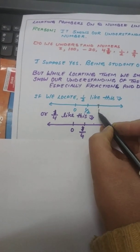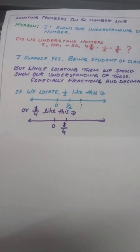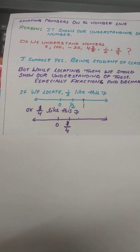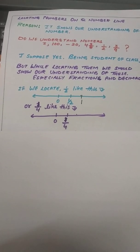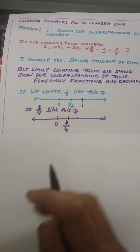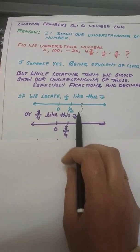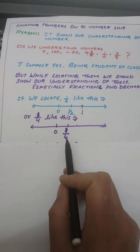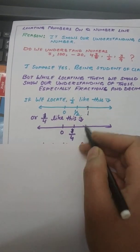It means now it's clear. Because everyone is well aware of whole numbers, integers. But if you have to show your understanding, you must show one unit of your line. Half can be understood if one is there. One-fourth can be understood if one is there.